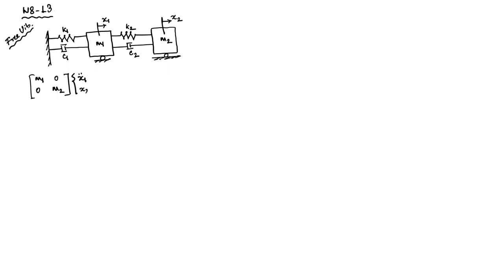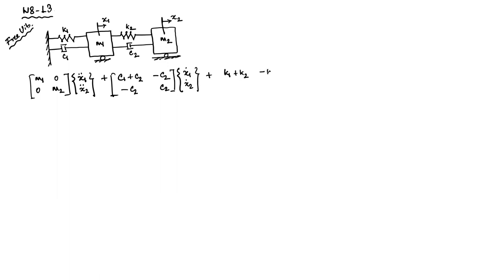The equation of motion in this case is the mass matrix [M1, 0; 0, M2] times the degrees of freedom X1-double-dot, X2-double-dot, plus the damping matrix [C1+C2, -C2; -C2, C2] multiplied by [X1-dot, X2-dot], plus the stiffness matrix [K1+K2, -K2; -K2, K2] multiplied by [X1, X2], equals zero on the right-hand side — this is the homogeneous part — along with initial conditions.